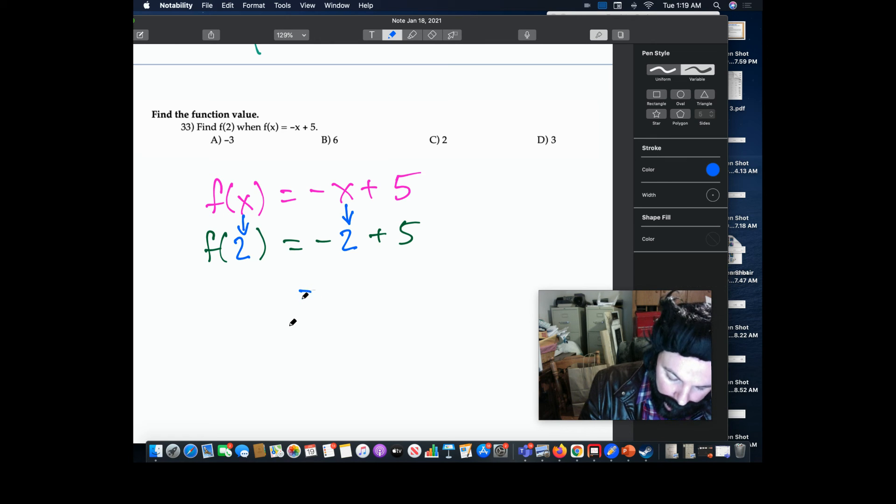And so when we solve this, we have 5 minus 2, which is 3. And there's our answer, bub.